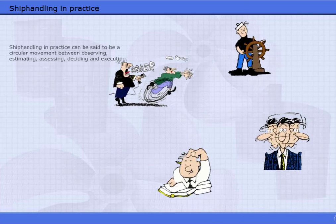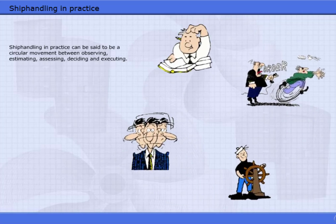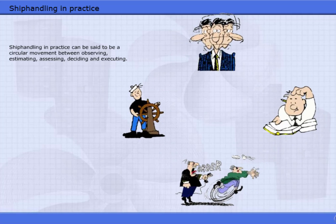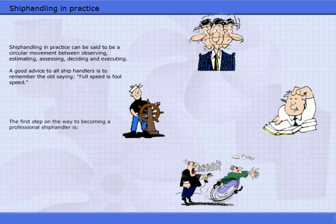Ship handling in practice can be said to be a circular movement between observing, estimating, assessing, deciding, and executing. A good advice to all ship handlers is to remember the old saying, full speed is full speed. The first step on the way to becoming a professional ship handler is observation of the whole situation, estimating and assessing possible actions, deciding what to do, executing the decisions.